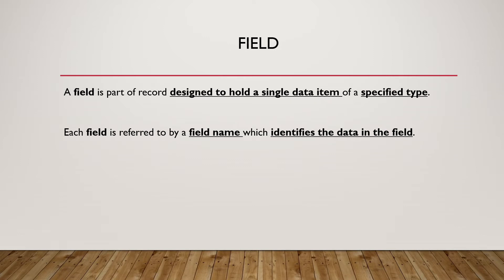Field. A field is part of a record designed to hold a single data item of a specified type. Each field is referred to by a field name which identifies the data in the field.